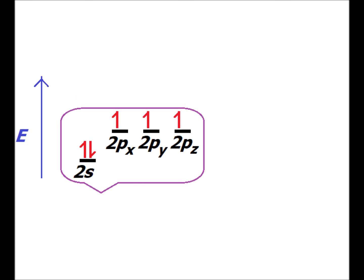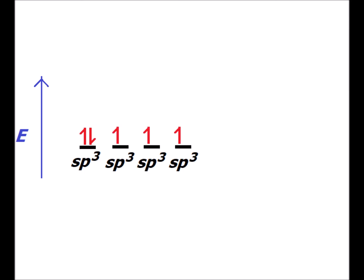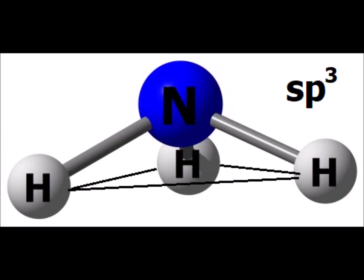Now we hybridize all four of the valence orbitals for nitrogen. We get four iso-energetic sp³ hybrids, one of which has two electrons and the other three of which are half-filled. The half-filled orbitals will be used to form bonds and the filled sp³ hybrid will hold the lone pair. Our classic sp³ hybridized nitrogen compound is ammonium.